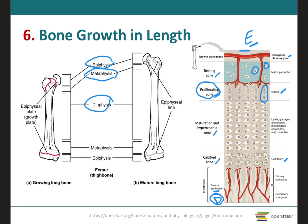Next, we have the zone of hypertrophic cartilage. This layer consists of large, maturing chondrocytes that are arranged in columns.